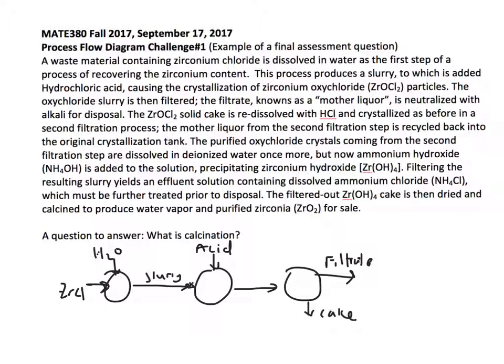The filtrate is the mother liquor, which is neutralized with alkali for disposal. We've got alkali added here and this goes to waste. The cake is redissolved with hydrochloric acid and crystallized as before in a second filtration process.